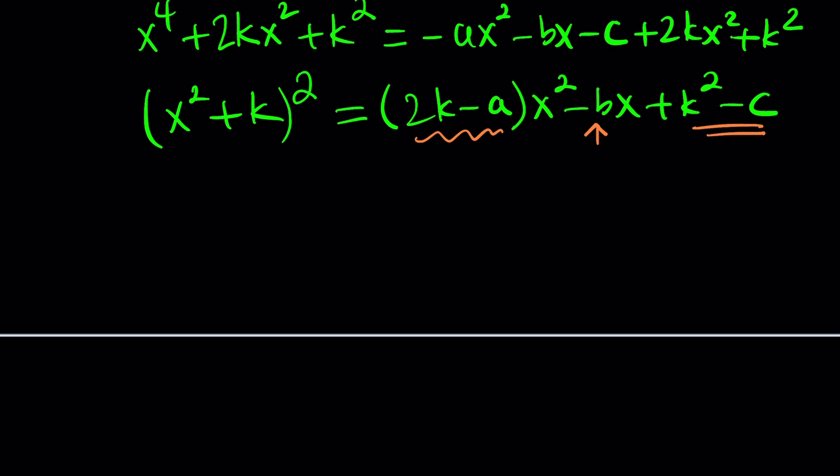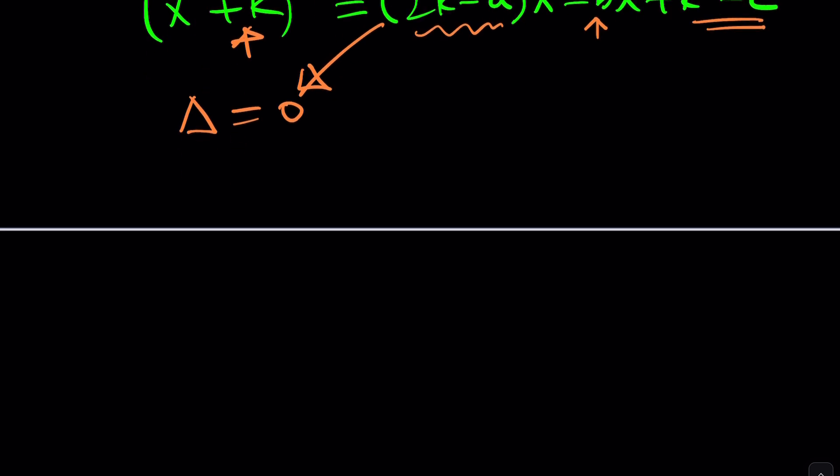This is the coefficient of x squared. This is the coefficient of x. This is your constant term. You want the quadratic on the right-hand side to be a perfect square. So its discriminant should be 0. Because this is already a perfect square. A perfect square equals another perfect square can be solved easily, because m squared equals n squared, you have two solutions: m equals n, m equals negative n. So that's easy to solve once we get to that point.